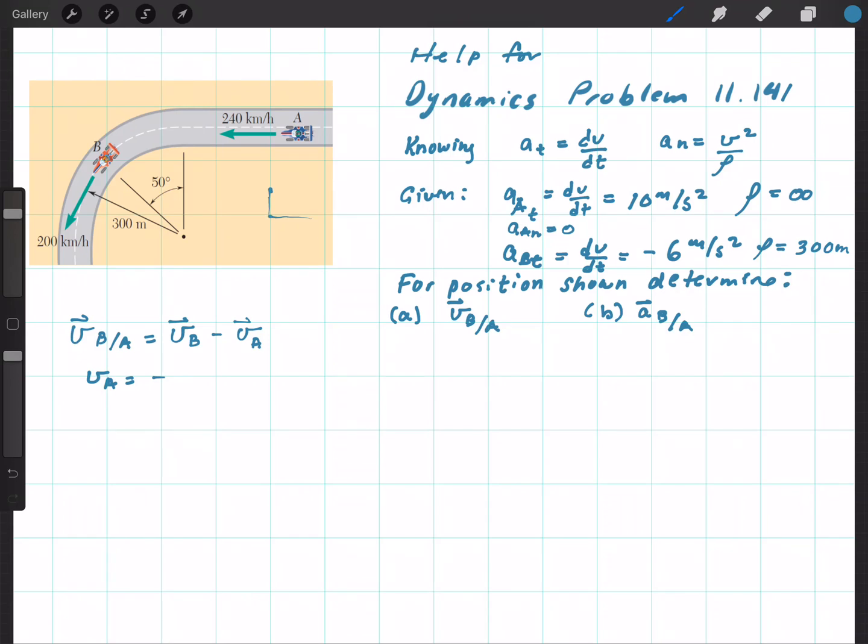So if we say this is X and this is Y, then we have V_A is headed in a negative i direction, or 240 kilometers per hour in a negative i direction, and V_B.